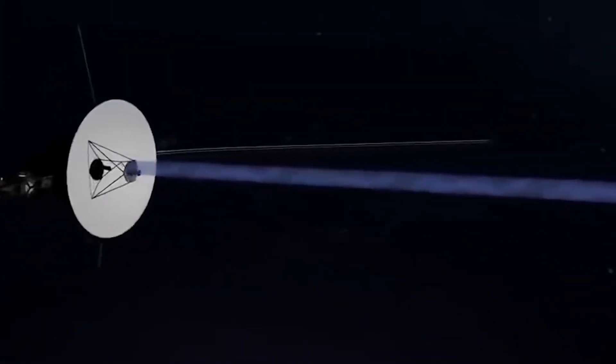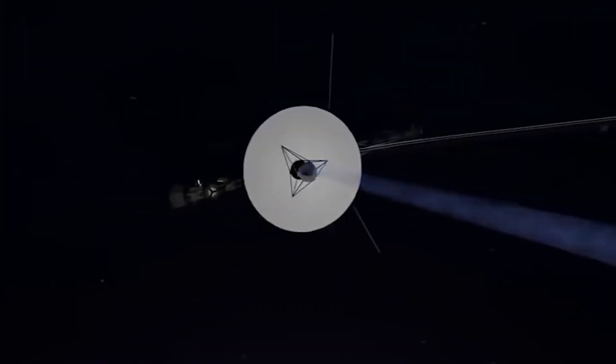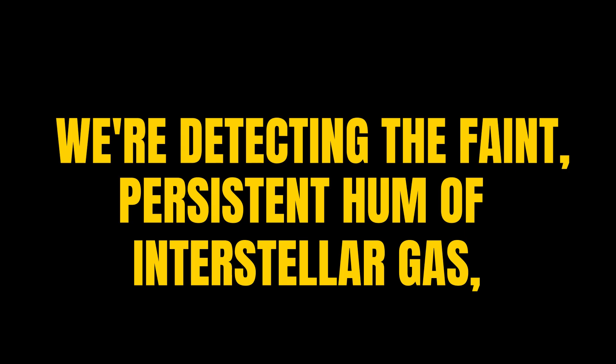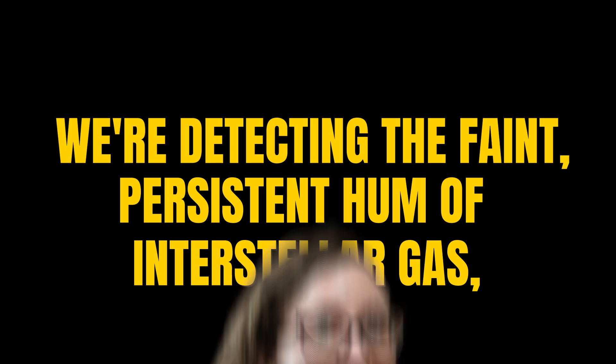Between occasional bursts from solar storms, there was a faint, persistent hum. A monotone vibration of interstellar gas, continuously present since 2017. We're detecting the faint, persistent hum of interstellar gas, Ocker said.